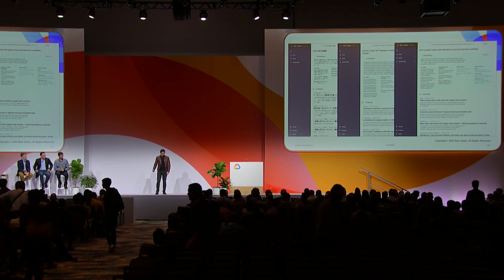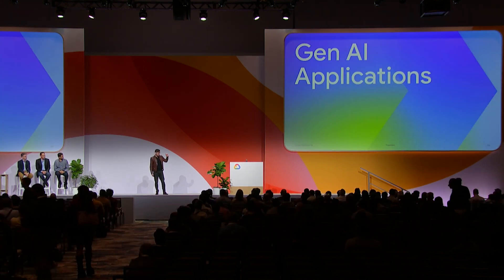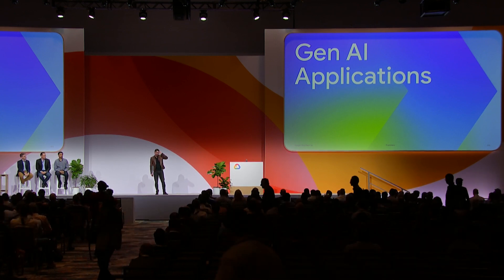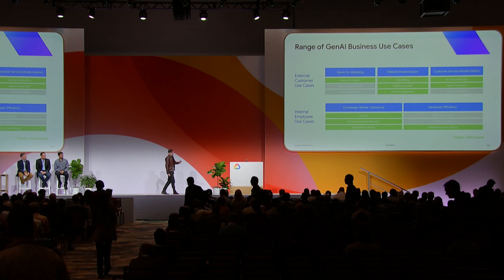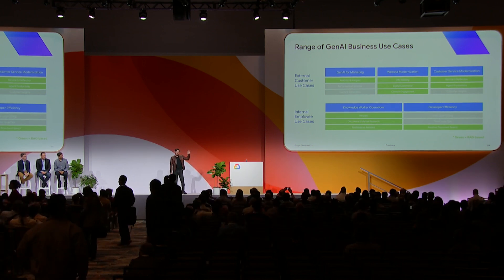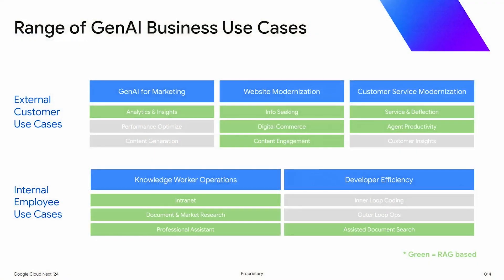Thanks, Clarence. So this next section is gen AI applications. Taking a step back from what the customer just shared — we're seeing a whole range of gen AI business use cases. We've bucketed these for simplicity. The blue is essentially thematic pieces: gen AI for marketing, website modernization, customer service, and internally knowledge worker operations. What's really interesting is when you create sub-concepts on these, we're seeing that many of them are actually improved by RAG — the items shown in green — and we'll show you why in a second.